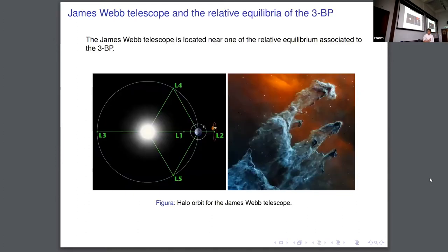There is a recent example: the James Webb telescope has been deployed in an orbit which is near one of the Lagrange points of the three-body problem. The satellite is not exactly at the Lagrange point, but it's in an orbit around this point. Of course, this point is not stable, which means that we have to make corrections in the position because it tends to drift away, although it does not go away very fast.